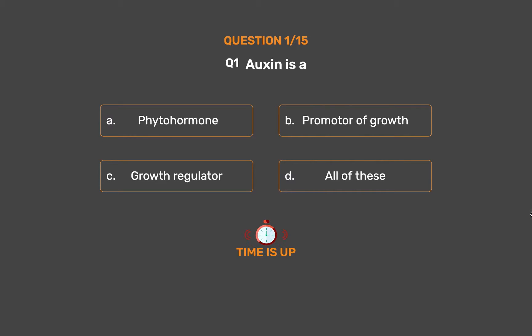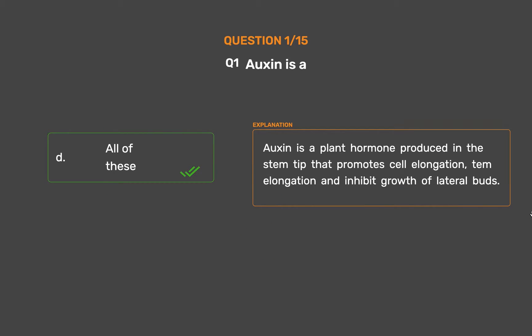The correct answer is Option D, All of these. Auxin is a plant hormone produced in the stem tip that promotes cell elongation, stem elongation, and inhibits the growth of lateral buds.